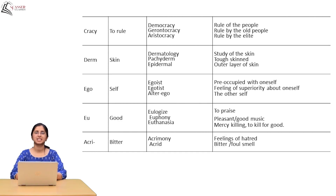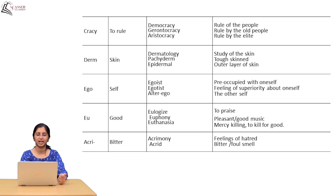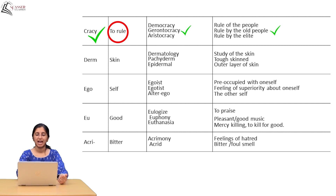I've written some more root words to make this topic clearer. The root 'cracy' means to rule. So democracy means rule of the people. Gerontocracy means rule of the old people. Aristocracy means rule by the elite. Next, 'derm' means skin. Dermatology means study of skin. Pachyderm means tough skin. Epidermal means the outer layer of skin.